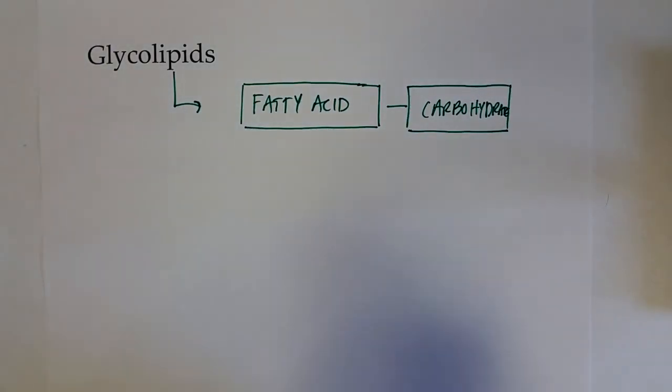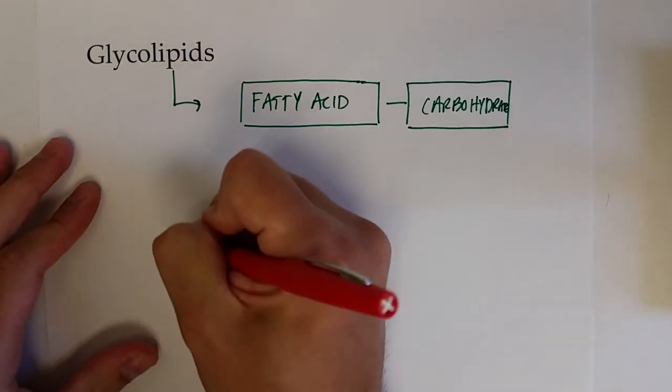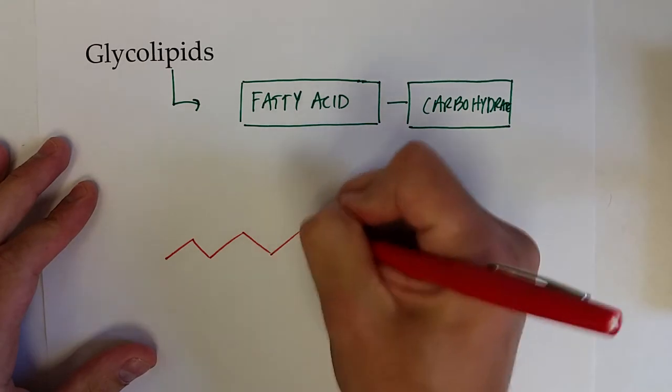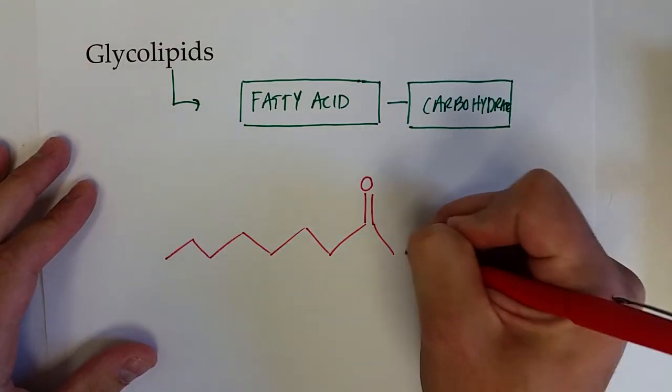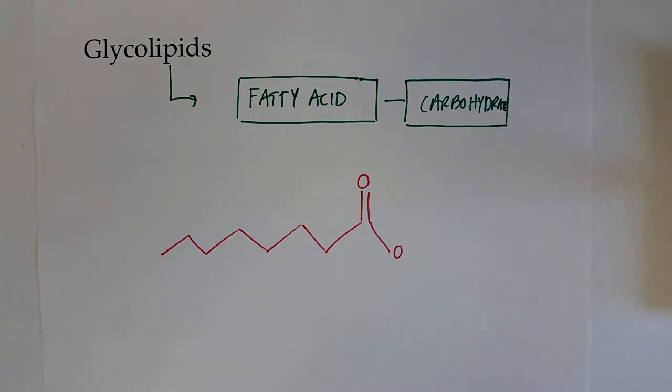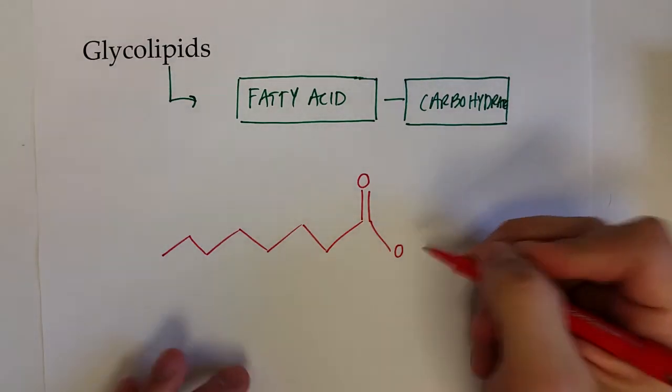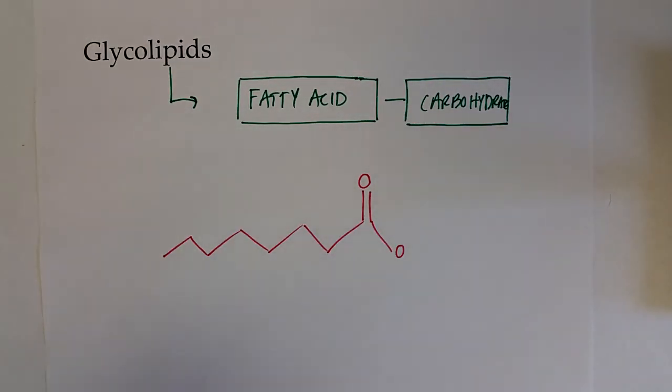And so this will link up at the carboxylic acid end of a fatty acid. So if we drew a fatty acid here, okay, so if I drew that, that would be the start of our fatty acid. If I drew this hydrogen right on that oxygen, that would just be a fatty acid.